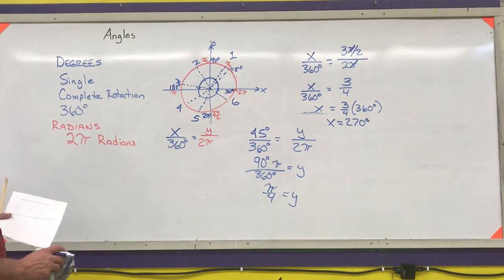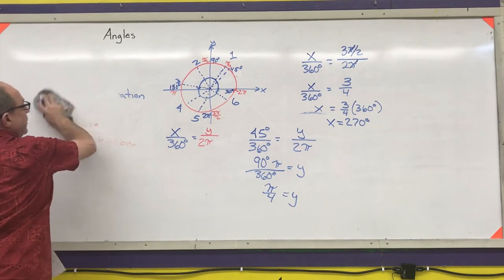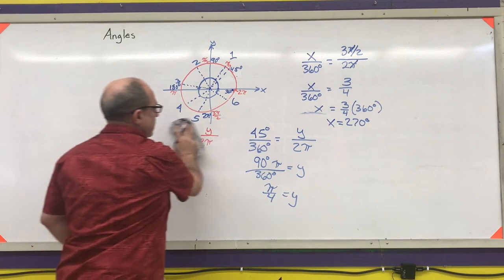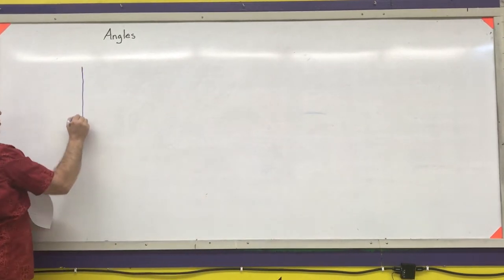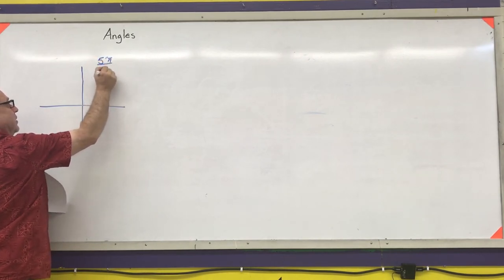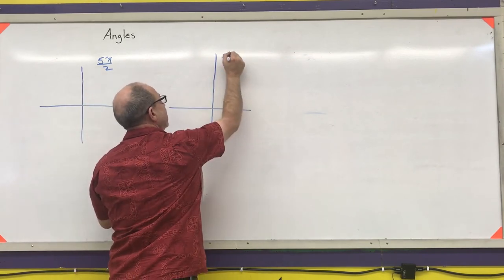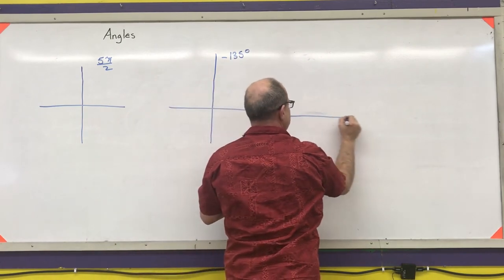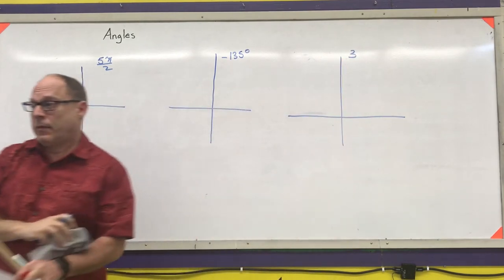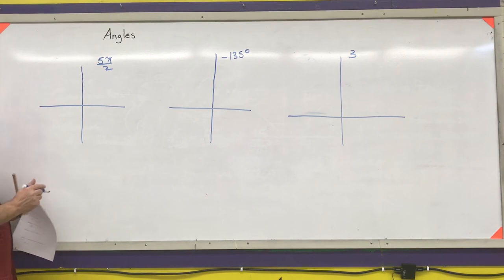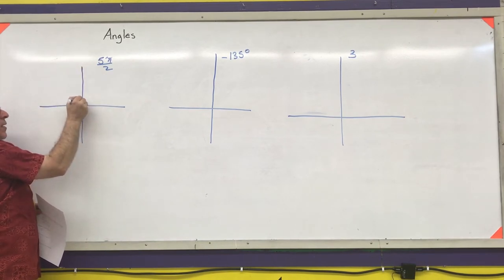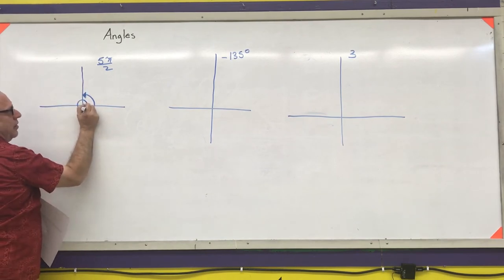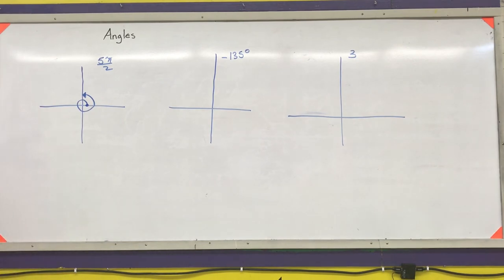I missed example 1.4, so I'm going back to do that now. Example 1.4 is drawing angles in standard position. The three angles are 5π/2, negative 135 degrees, and 3 radians. For radians in terms of π, I know each 90 degrees is π/2, so: 1π/2, 2π/2, 3π/2, 4π/2, 5π/2. When drawing an angle in standard position, you need to show how far it's actually rotating and in which direction.